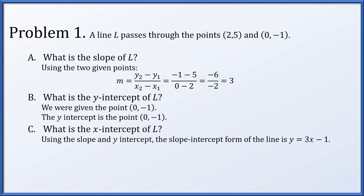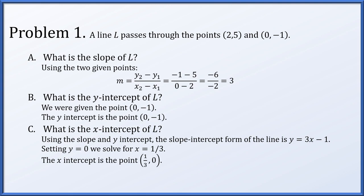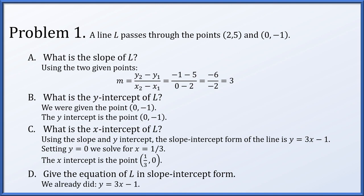What about the x-intercept of L? Now we have the slope and the y-intercept, so we can write slope-intercept form: y = 3x - 1. Setting y equal to 0 gives 0 = 3x - 1, so x = 1/3. The x-intercept is (1/3, 0). Finally, the equation of L in slope-intercept form is y = 3x - 1.